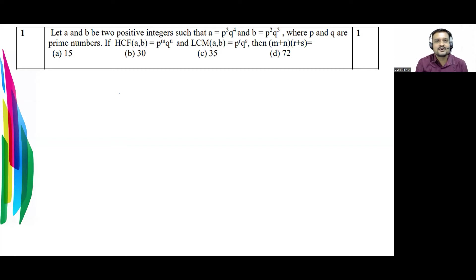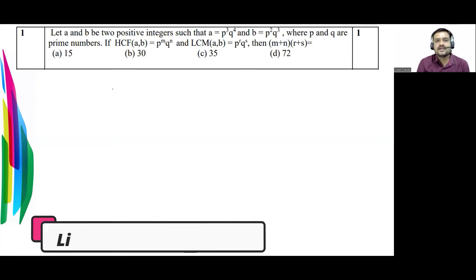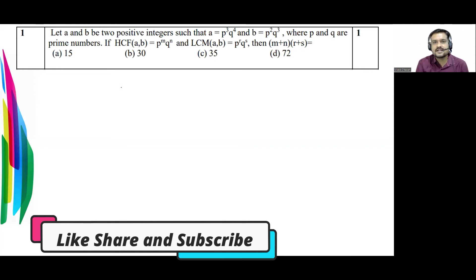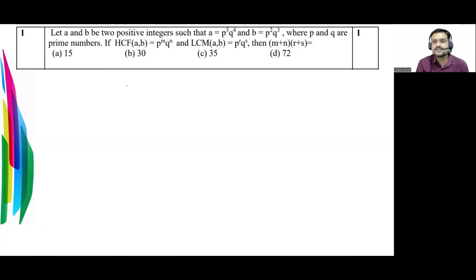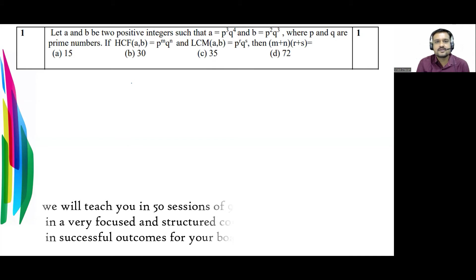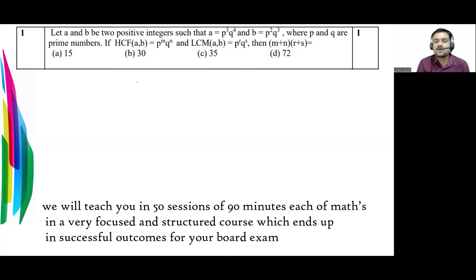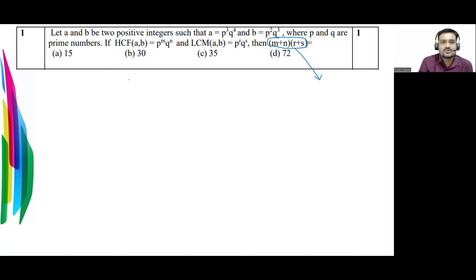Let's start with the first question. Let a and b be two positive integers such that a = p³q⁴ and b = p²q³, where p and q are prime numbers. HCF of a and b is given as p^m · q^n, and LCM of a and b is given as p^r · q^s. We have to find the value of (m+n) × (r+s). We need all four variables m, n, r, and s.